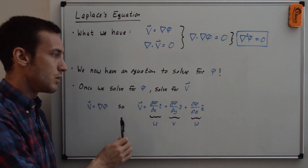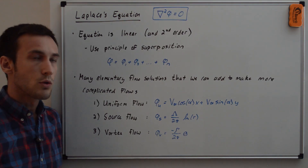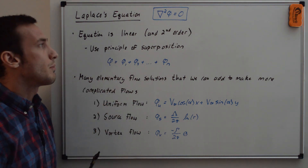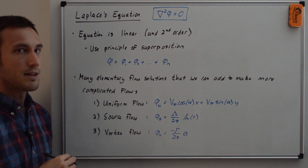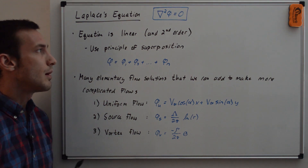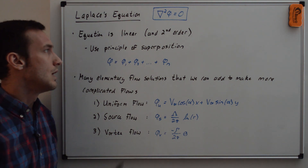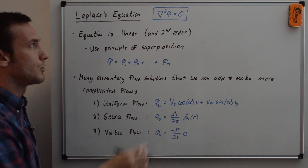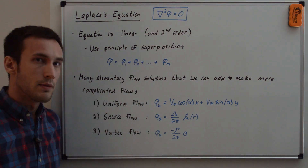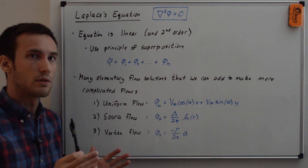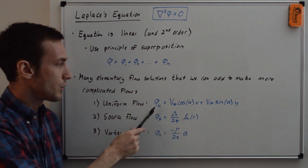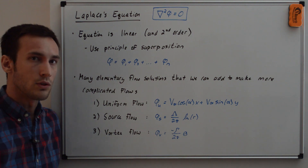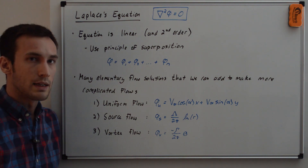Laplace's equation is linear and second order. The linearity is what makes it so powerful — we can use the principle of superposition, which says that the sum of individual solutions to Laplace's equation is also a solution. So phi can be a combination of multiple solutions and it'll still satisfy the equation. Looking ahead, there are elementary flows which are simplified flows that are solutions to Laplace's equation, and by adding these together in certain ways you can get more complicated flows, such as the flow around an airfoil, and even predict the lift.